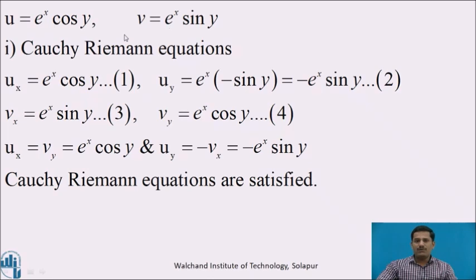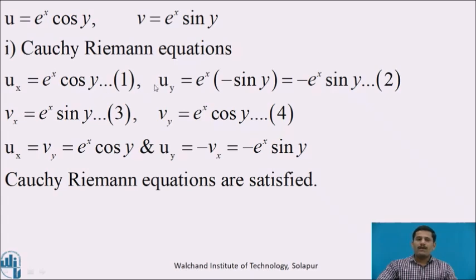To check whether the given function is analytic or not, we use the sufficient condition. The first condition is the Cauchy-Riemann equations. Differentiating u partially with respect to x, treating y constant, cos y is constant and the derivative of e^x is e^x itself. Differentiating u partially with respect to y, e^x is treated as constant, and the derivative of cos y is −sin y, giving uy = −e^x sin y.